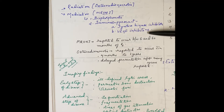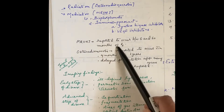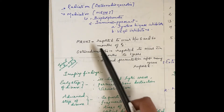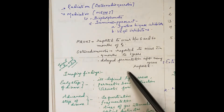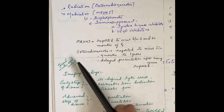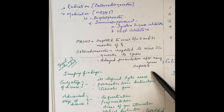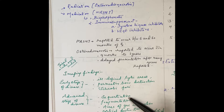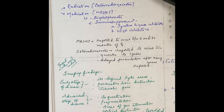Vascular endothelial growth factor inhibitors can also cause MRONJ. Medication-related osteonecrosis of the jaw is reported to occur between 6 and 60 months of treatment. Osteoradionecrosis due to radiation is reported to occur within 4 months to 2 years, with sometimes delayed presentation after many years. In early stage, there will be ill-defined lytic areas, permeative bone destruction, and sclerotic foci. In advanced stage, there will be sequestrum, fragmentation, areas of gas attenuation, cortical destruction, periosteal reaction, and pathological fracture. History is very important, and the inferior alveolar canal is also involved.